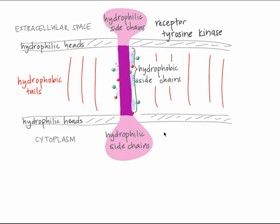This is the form of the transmembrane section of each receptor tyrosine kinase in a dimer. Each RTK has an extracellular domain, a transmembrane domain, and an intracellular domain. Like proteins found in the cytoplasm, both the extracellular domain and the cytoplasmic domain have hydrophilic side chains exposed to their watery surroundings. The transmembrane domain is a single alpha helix, and the amino acids in that helix have hydrophobic side chains.